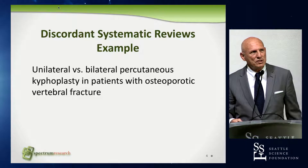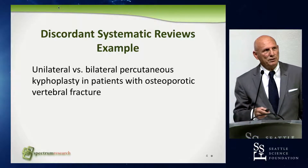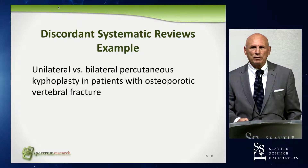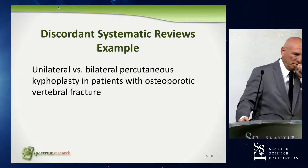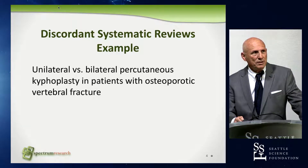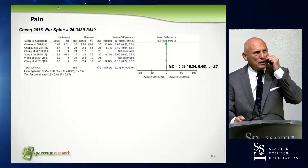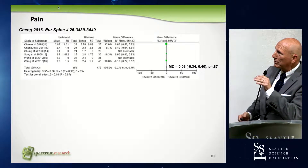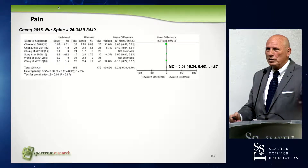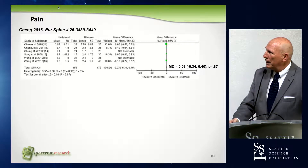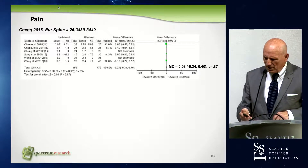The first example is a set of systematic reviews done a few years ago reporting results of unilateral versus bilateral percutaneous kyphoplasty in patients with vertebral fracture. This particular systematic review by Chang, published in 2016, reports on pain after surgery and basically reports that there's no difference in pain.